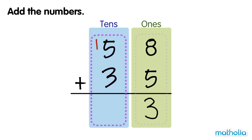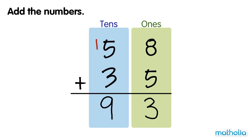Now let's add the tens. 1 ten plus 5 tens plus 3 tens equals 9 tens. 58 plus 35 equals 93.